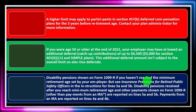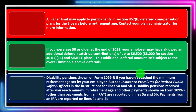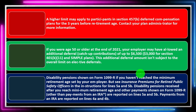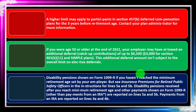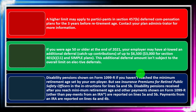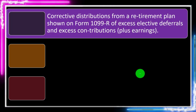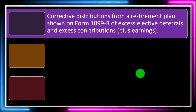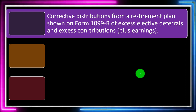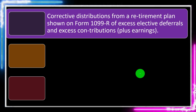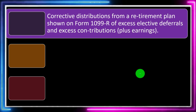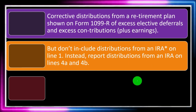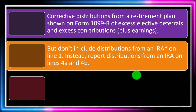Disability pensions shown on Form 1099-R — if you haven't reached the minimum retirement age set by your employer — are reported on line 1. Disability pensions received after reaching minimum retirement age, and other payments shown on Form 1099-R other than IRA distributions, are reported on lines 5a and 5b. Payments from an IRA are reported on lines 4a and 4b. Hopefully if the W-2 is filled out properly, your job is to interpret it, do the data input, and explain the boxes using the W-2 instructions.